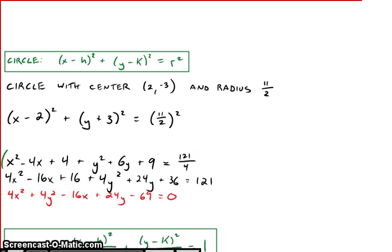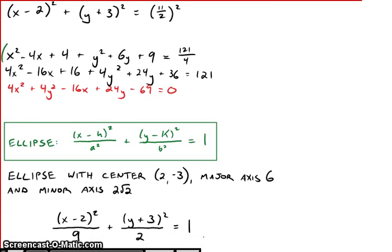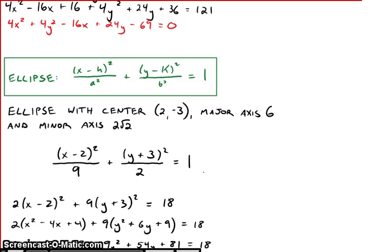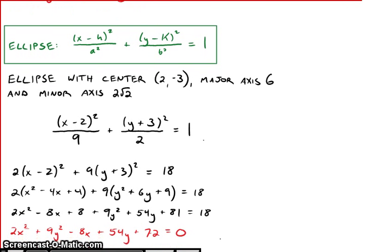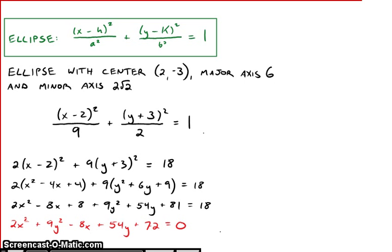The next conic section we took a look at was the ellipse. The form was somewhat similar except this ellipse formula was set up to equal 1 instead of r squared. It also had a and b in it. A and b coincided with major and minor axes. Here is an example ellipse whose center is at (2, -3). It has a major axis 6 units long, minor axis 2 times root 2. This is the formula for that ellipse. However it can be rewritten in another way.